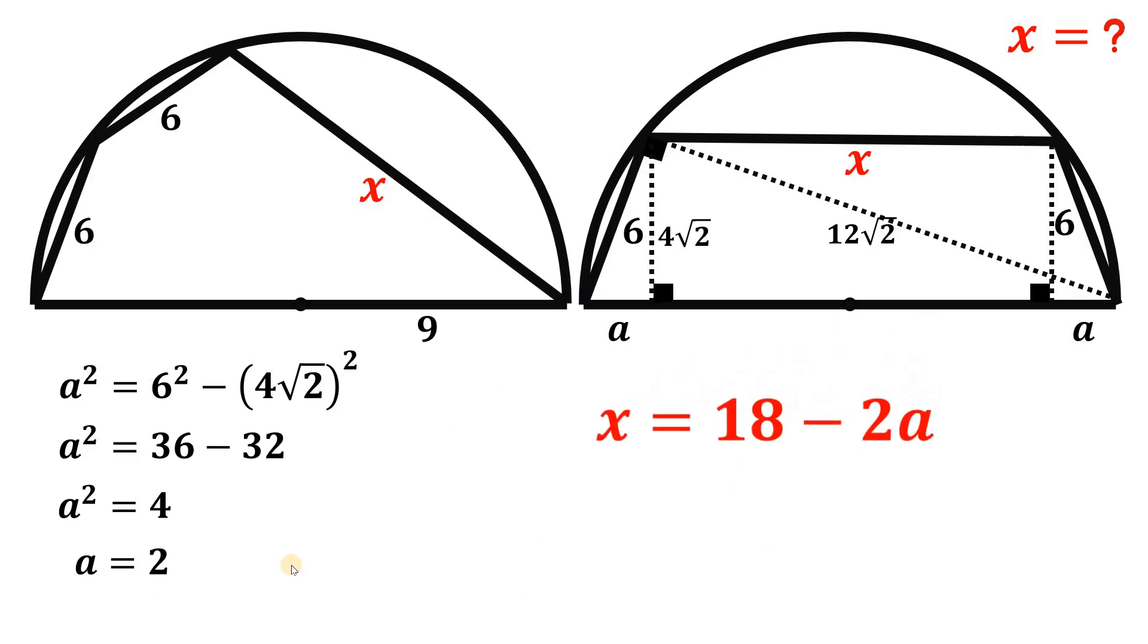Now we know a is 2, so we get the value of x. So let's replace this a with 2, and we have 18 minus 2 times 2, or 4, and 18 minus 4 simply equals 14. And that is the length of this segment x.